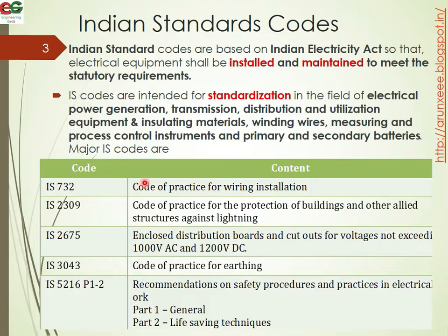IS 732 is the code for the practice of wiring installations. IS 2309 is about lightning protection — it covers how lightning strikes occur and the protection of buildings and other allied structures against lightning.